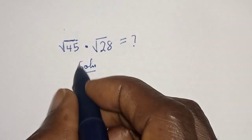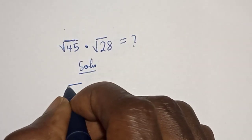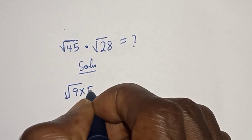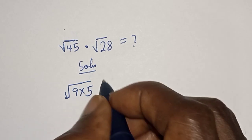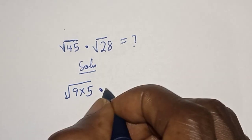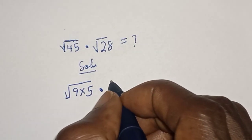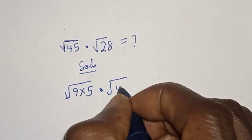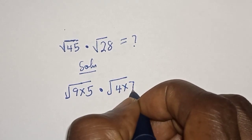Square root of 45 can be rewritten as 9 times 5. That is the square root of 9 times 5 multiplied by square root of 28 is square root of 4 times 7.